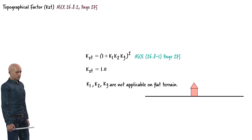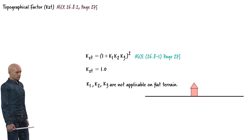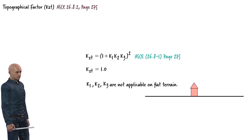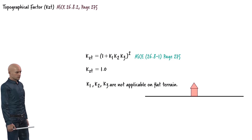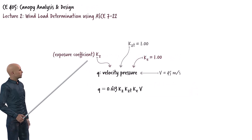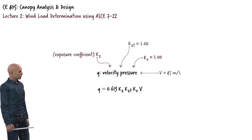You may be wondering why we took the time to discuss how to determine K1, K2, and K3 even though they are not directly applicable to this problem. The reason is that understanding these factors is crucial for analyzing wind loads in more complex terrain scenarios. By exploring their definitions and how they influence wind pressure, you can develop a stronger foundation for applying the ASCE 7 standard in a variety of structural design contexts. This knowledge prepares us to tackle challenges where topographical effects play a critical role. We will discuss the exposure coefficient and continue our wind analysis in the next lecture. Thank you.